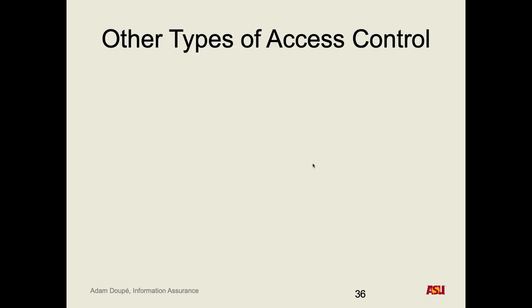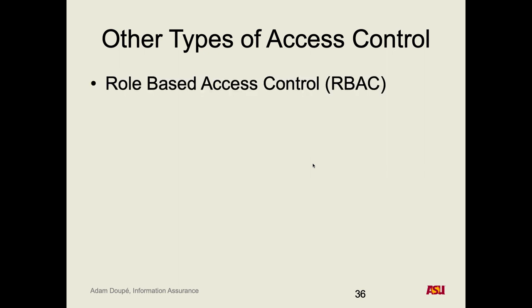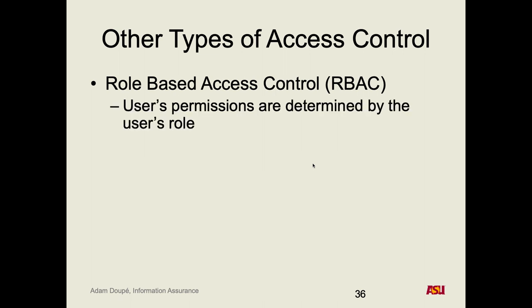This is not the only type of access control. A lot of what we've been talking about has been thinking about access control in terms of abstraction. When we show the matrix with all users and subjects, maybe it doesn't really make sense to think about individual users. Maybe it makes sense to group users by what their job does or what their role requires. There's a whole bunch of research on role-based access control — probably one of the most standard types of access control models. The user's permissions are determined by their role rather than who they are.